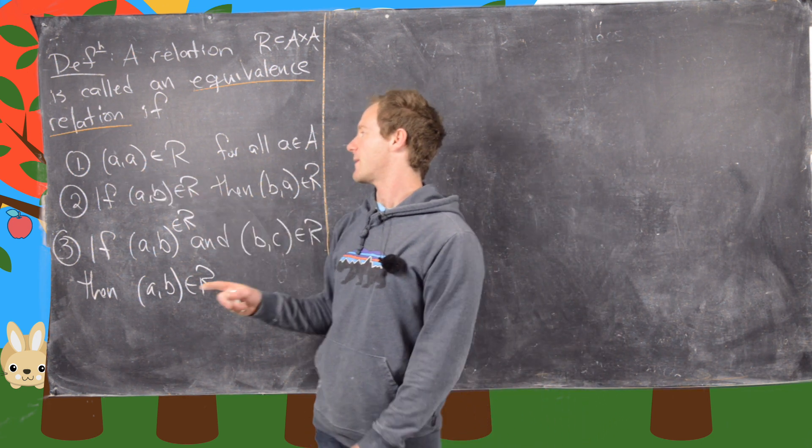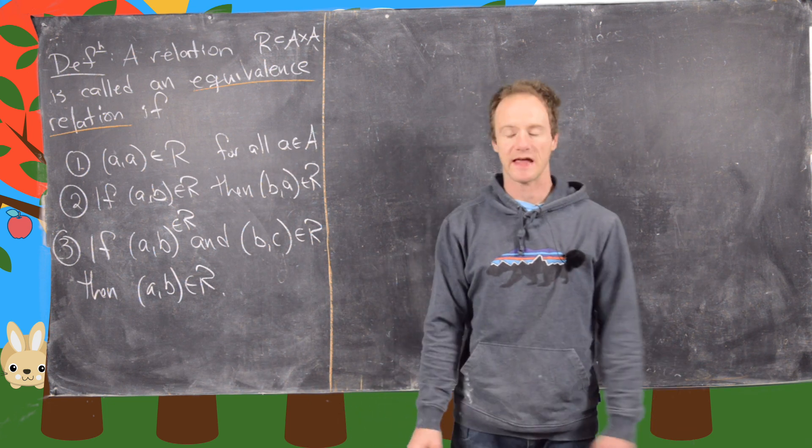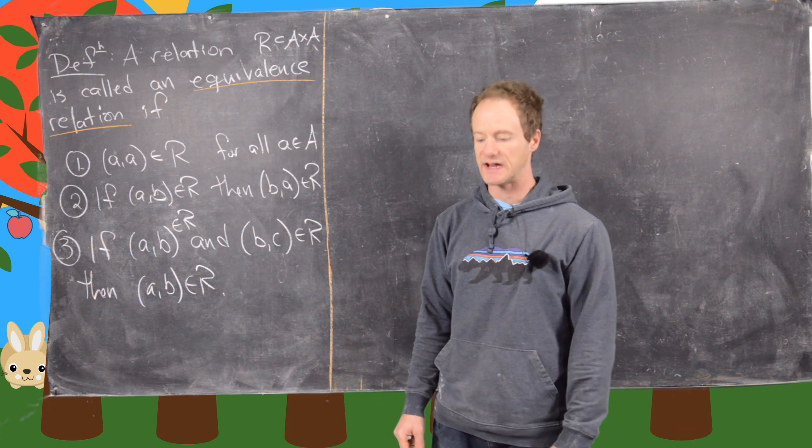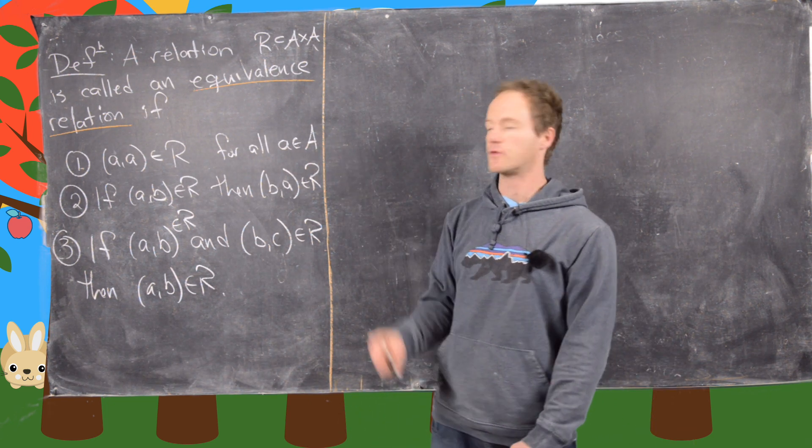So A, A is in R for all A in A. In other words, A is related to itself, so this is called reflexivity.